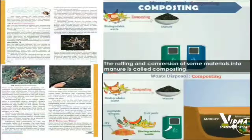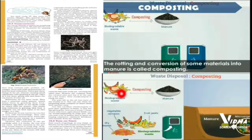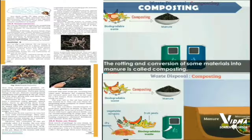Now let us know about composting. Composting means the conversion of all biodegradable waste into manure. The rotting and conversion of materials into manure is called composting, and this manure is mixed with the soil to increase its fertility. We collect all vegetable materials, peels, leftover food, or plant parts that can be decomposed. After some days, this is changed into manure. When the material no longer gives any foul smell and is completely rotten, it means it has changed into manure and is ready to use.